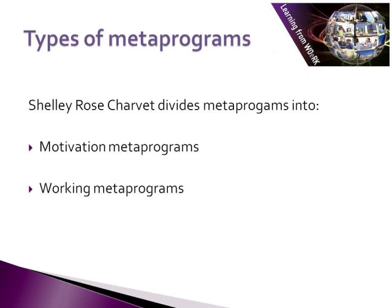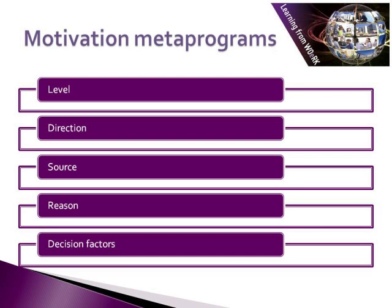Shelley Rose Jarve divides metaprograms into two categories: motivation metaprograms and working metaprograms. In the rest of this session we're going to examine the motivation metaprograms — looking at each programme, how you would identify it, what type of behaviour you might expect from someone using that programme, and how you would language things to stay in rapport and help them understand more fully. We're going to consider five motivation metaprograms: motivation level, direction of motivation, source of motivation, reason for motivation, and lastly decision factors.